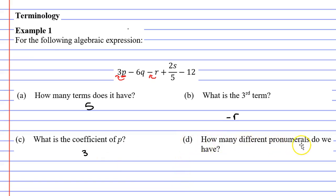Now moving on to question D, it says, how many different pronumerals do we have? We have p, q, r, and s as our pronumerals. There are four of them.